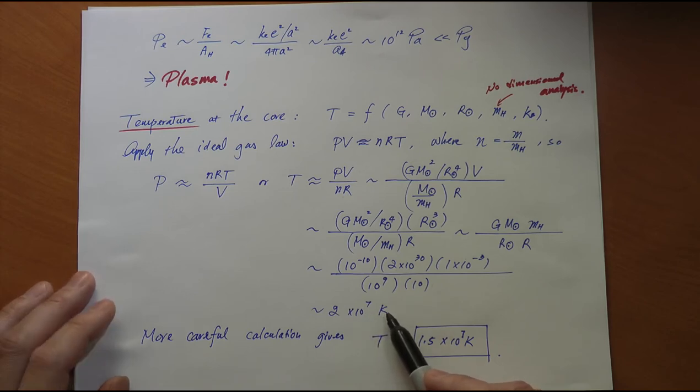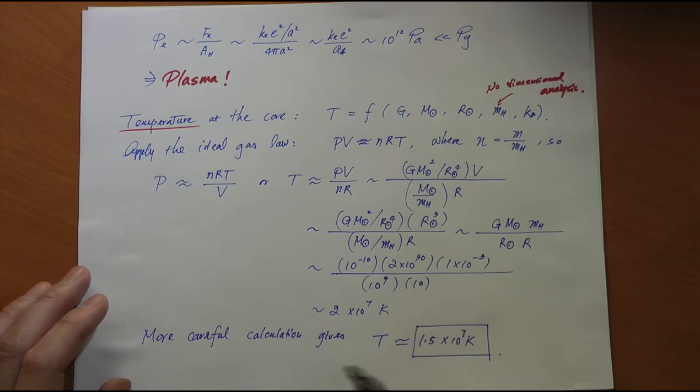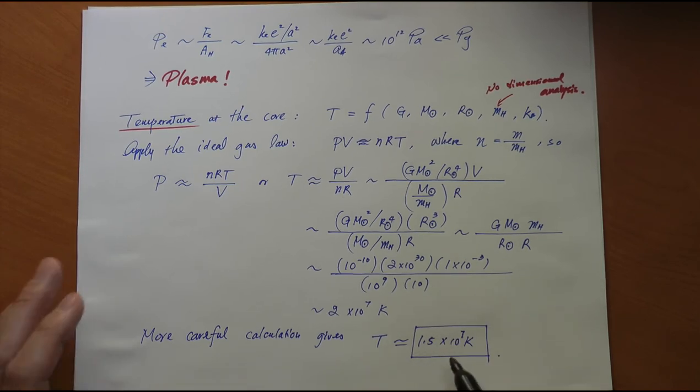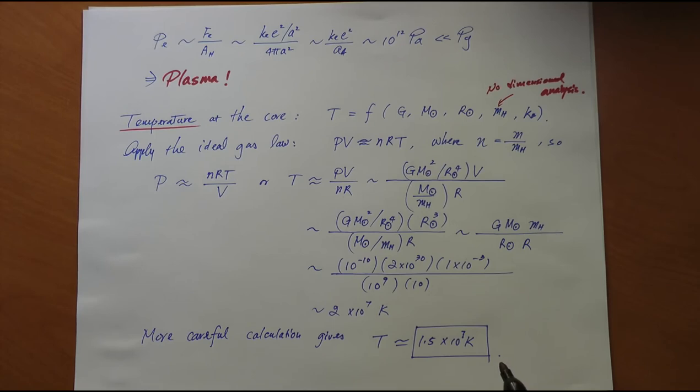Which is a reasonably good approximation because the actual number, when you do a more careful calculation, is 1.5 times 10^7 Kelvin, and this gives enough temperature for proton-proton cycle of nuclear fusion, and that is the energy source of our sun.